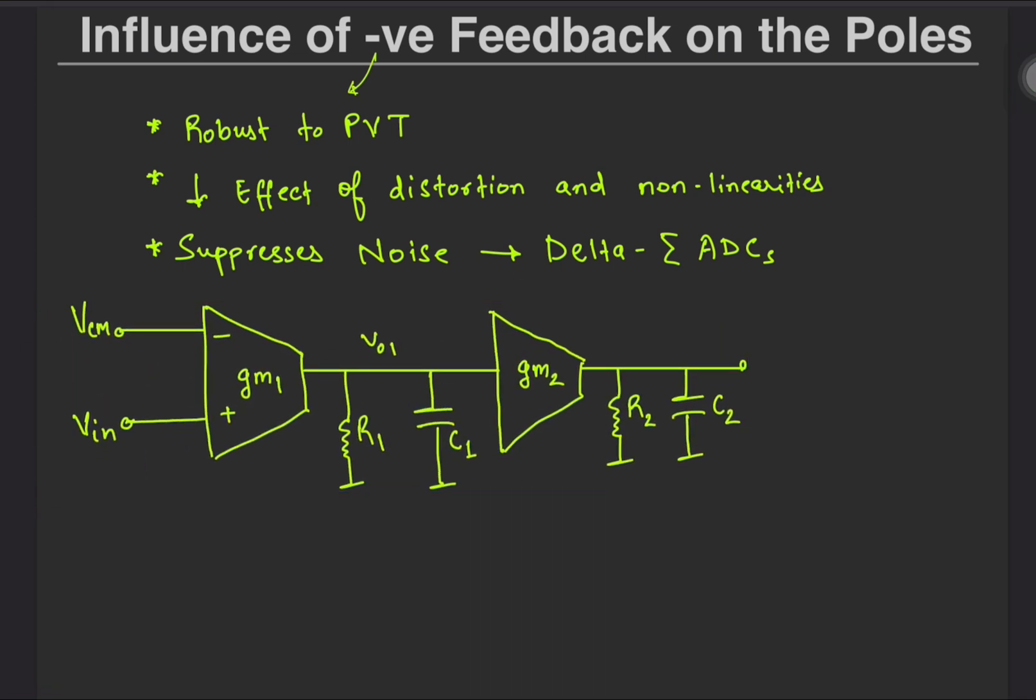First, let's look at a simple circuit to answer the question that does negative feedback even affect the poles of a circuit? Let's suppose that we have two transconductors of transconductances GM1 and GM2 with the parasitics and load modeled by the RNCs as shown.